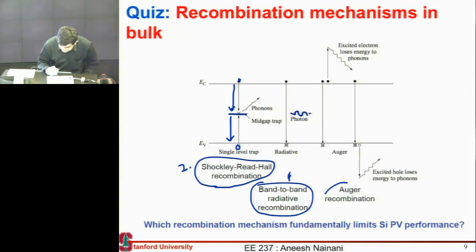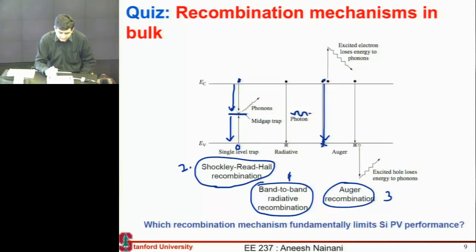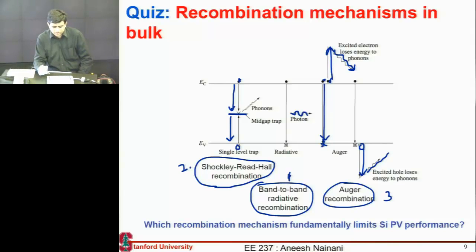Then there is a third recombination mechanism: when you have an electron and hole recombining, instead of giving that energy out as a photon, they give it to another particle — another electron, which rises up in energy but eventually loses that energy when it thermalizes. Similarly, the energy can be given to a hole, which thermalizes and loses that energy. This is Auger recombination.